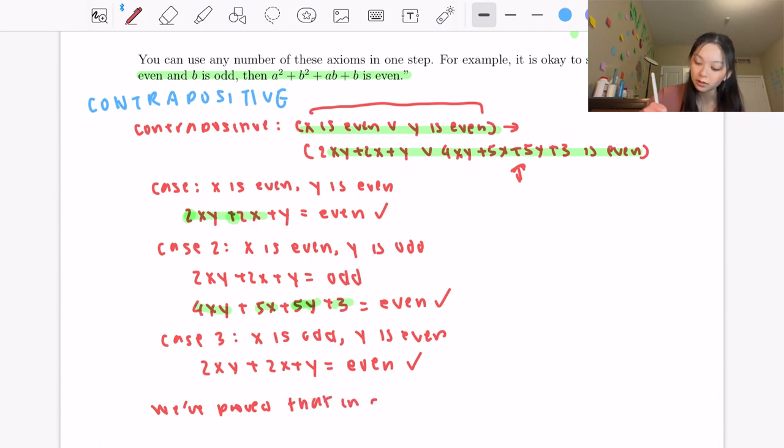So essentially we've proved that in all cases, 2xy + 2x + y or 4xy + 5x + 5y + 3 is even.